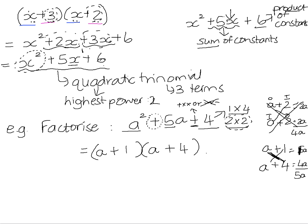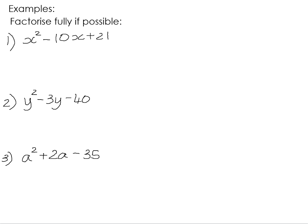I've got some more examples to practice this process. Factorize fully, if possible. We can see that we have a quadratic trinomial, so it's possible that it could factorize into two binomials. Starting with 21 — if we want to know what possible constants could give us 21, we could use 1 times 21, or the other pair of factors: 7 times 3. The plus sign on the last term tells us that our factors were either both positive or both negative.